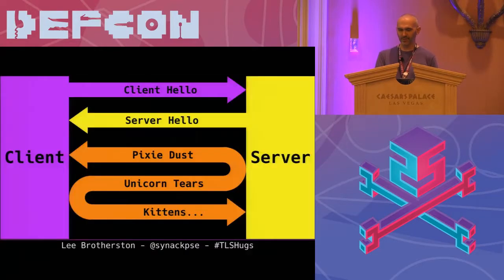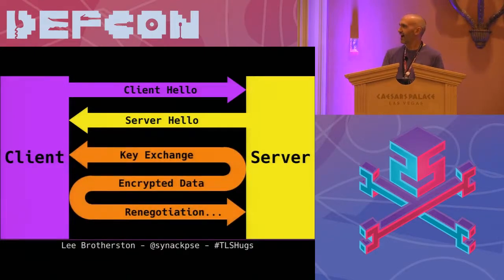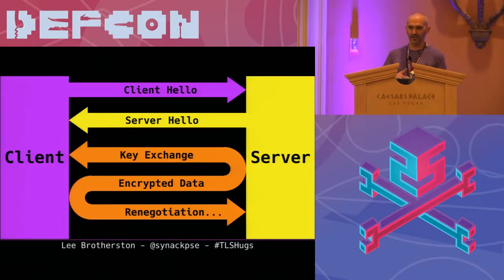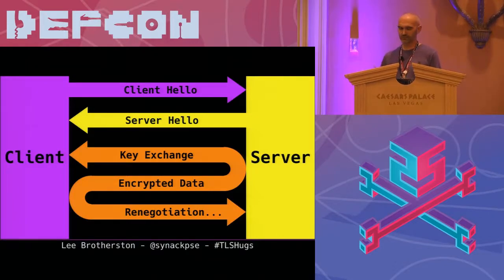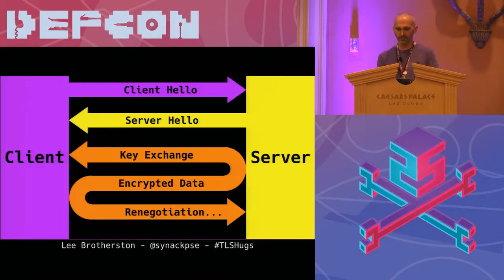Here's how it works. The client sends a client hello packet, and that packet contains a bunch of information — things like what cryptographic protocols it supports, what hashing algorithms it supports, what elliptic curves it has if any. The server replies with, from that list, the options it also accepts, and they determine what they're going to use. They then exchange keying data and renegotiate, and that carries on in a cycle until they're done.